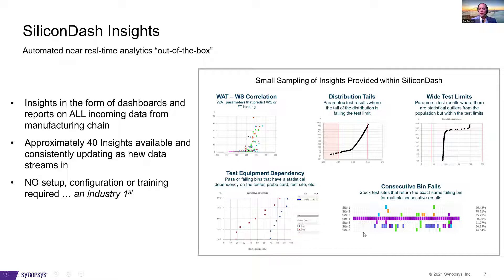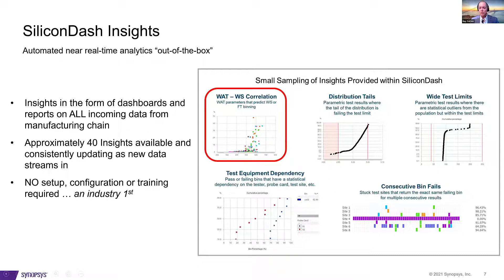The bottom examples show that test equipment can go out of calibration, causing parts to fail that are actually good. Without analytics, you might be throwing away good parts due to faulty equipment rather than actual die defects. The final example involves correlation — the ability to correlate any test to any test across the entire chip lifecycle. We'll now go into a specific example relying heavily on this correlation capability.